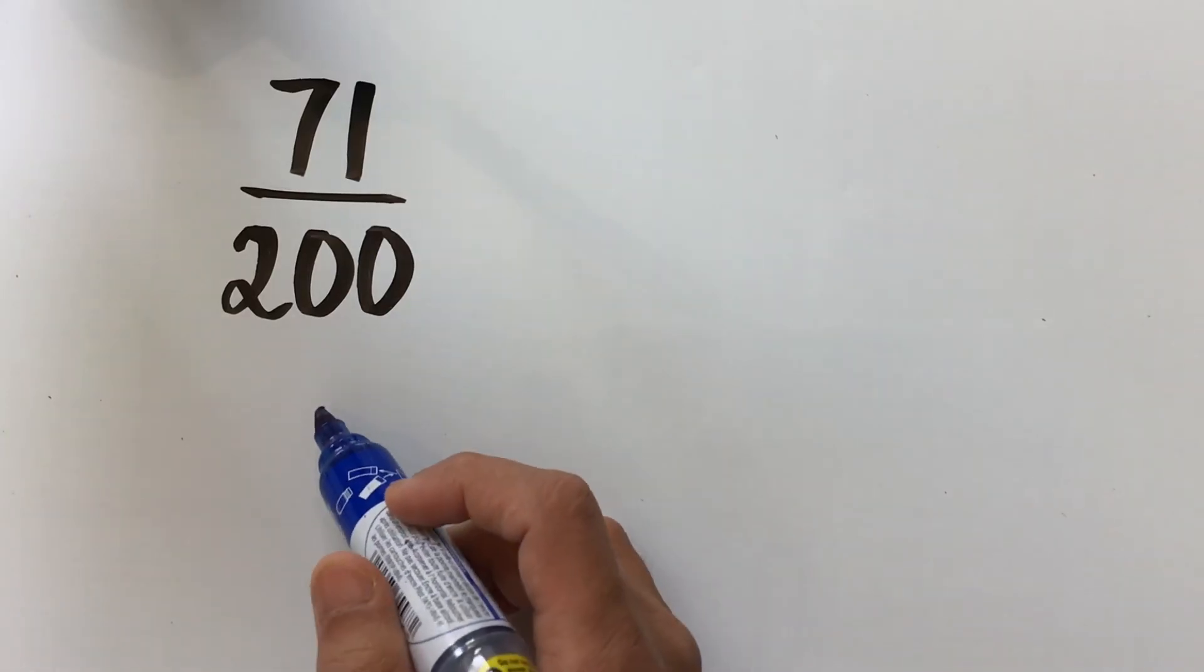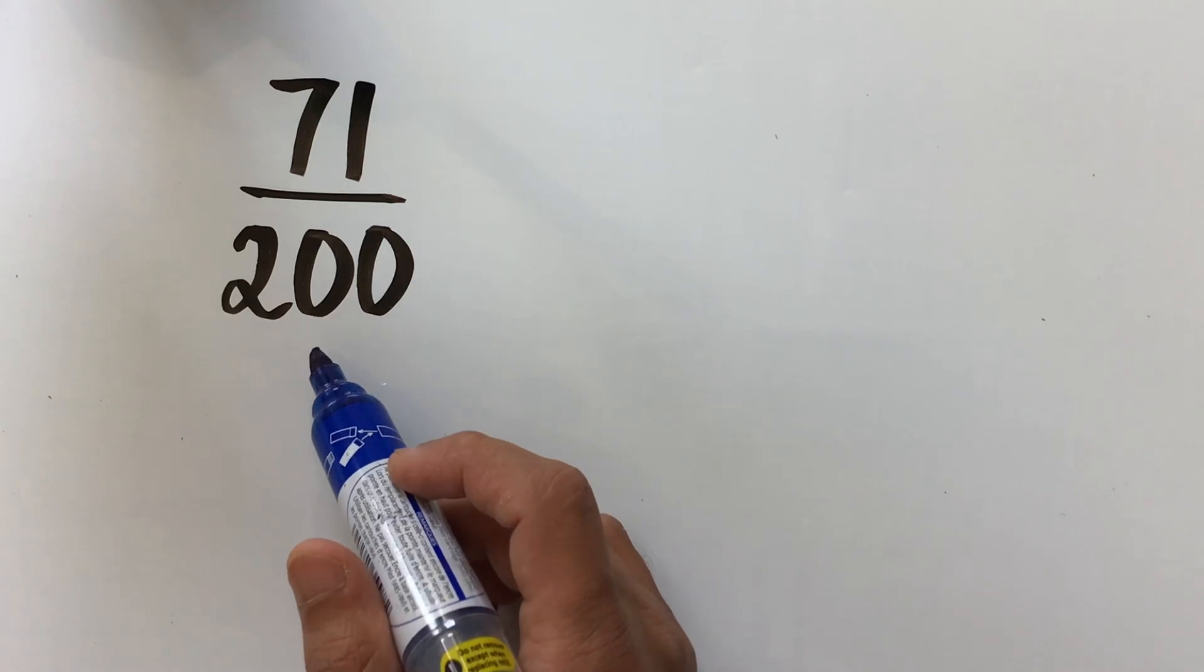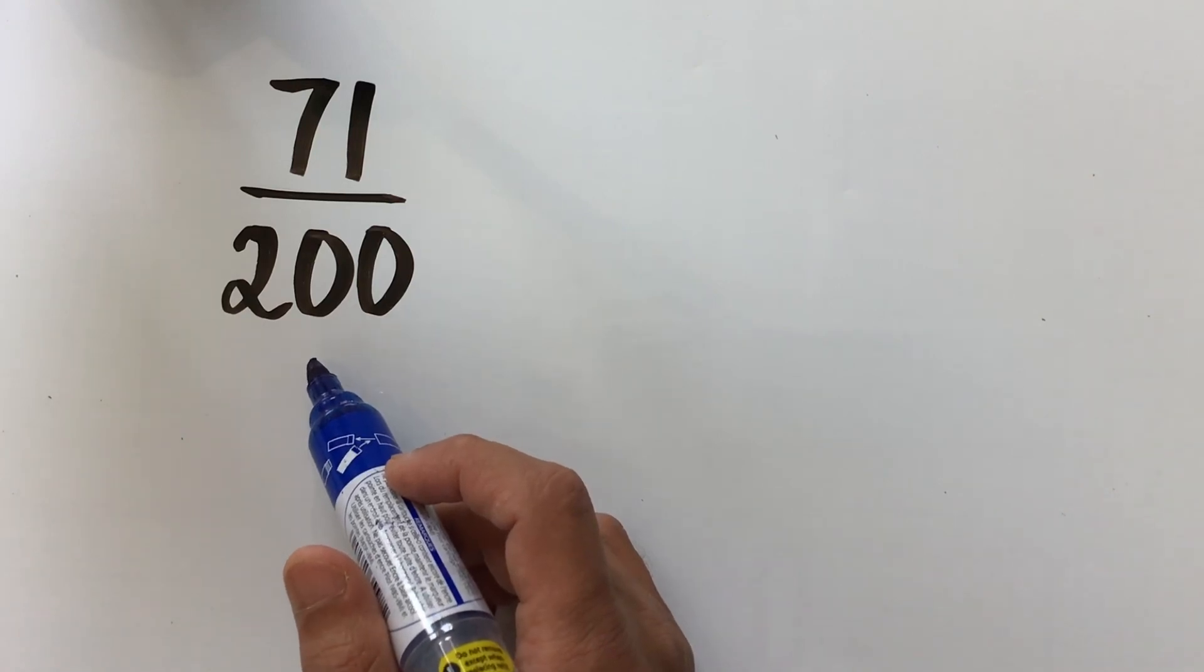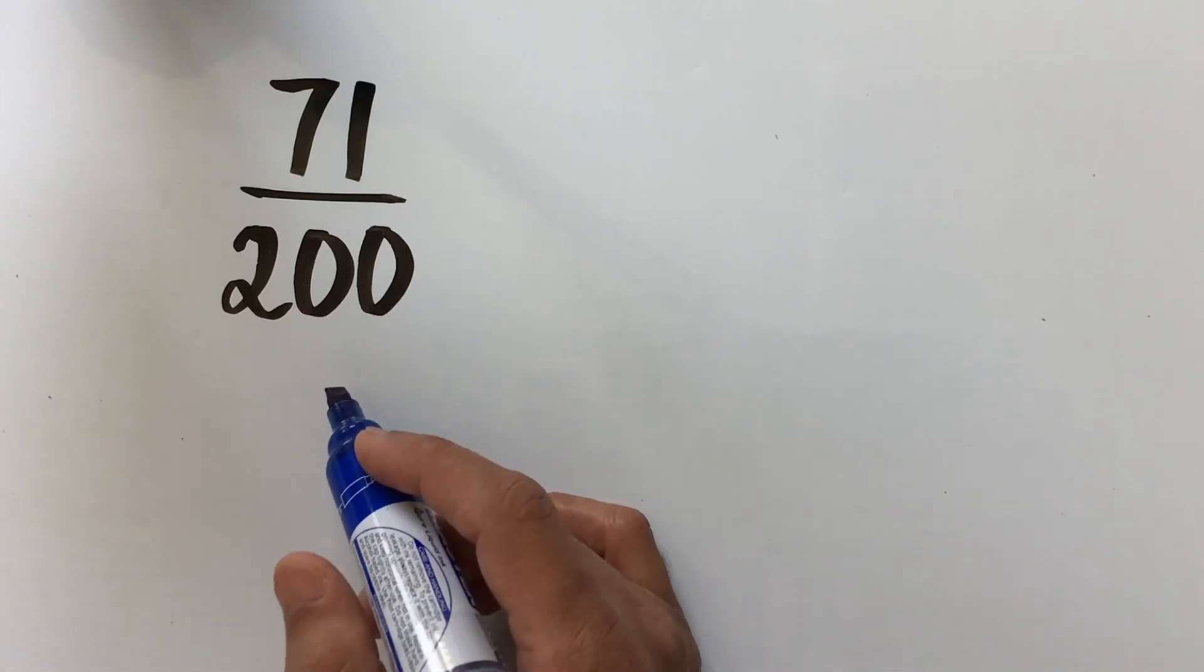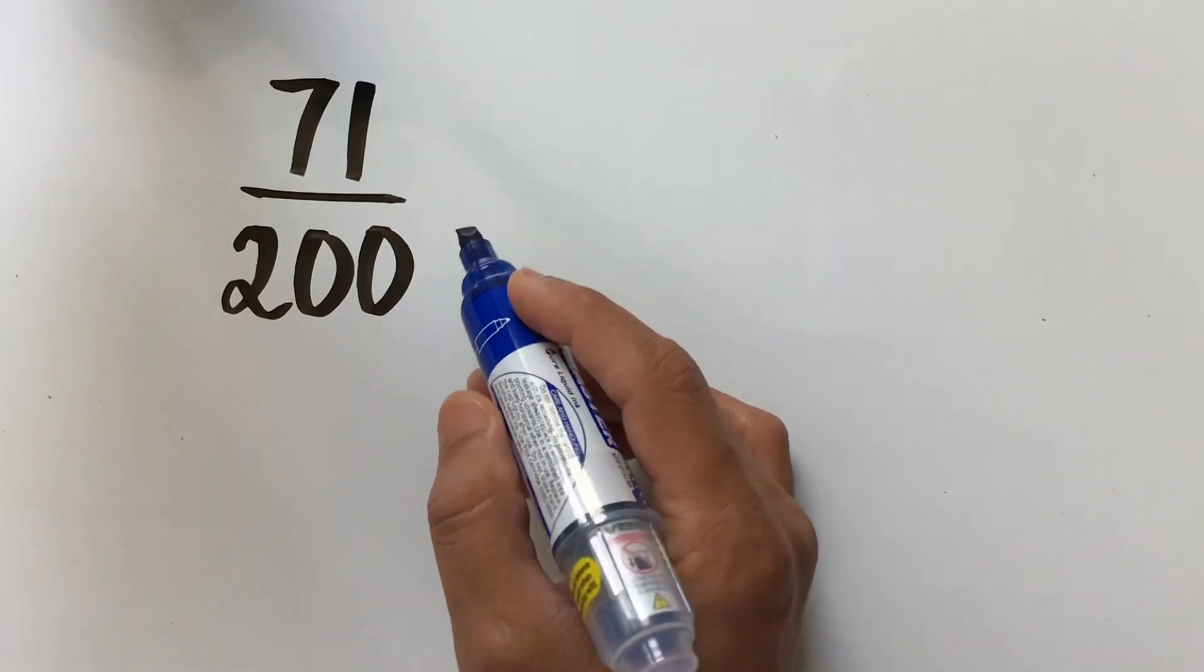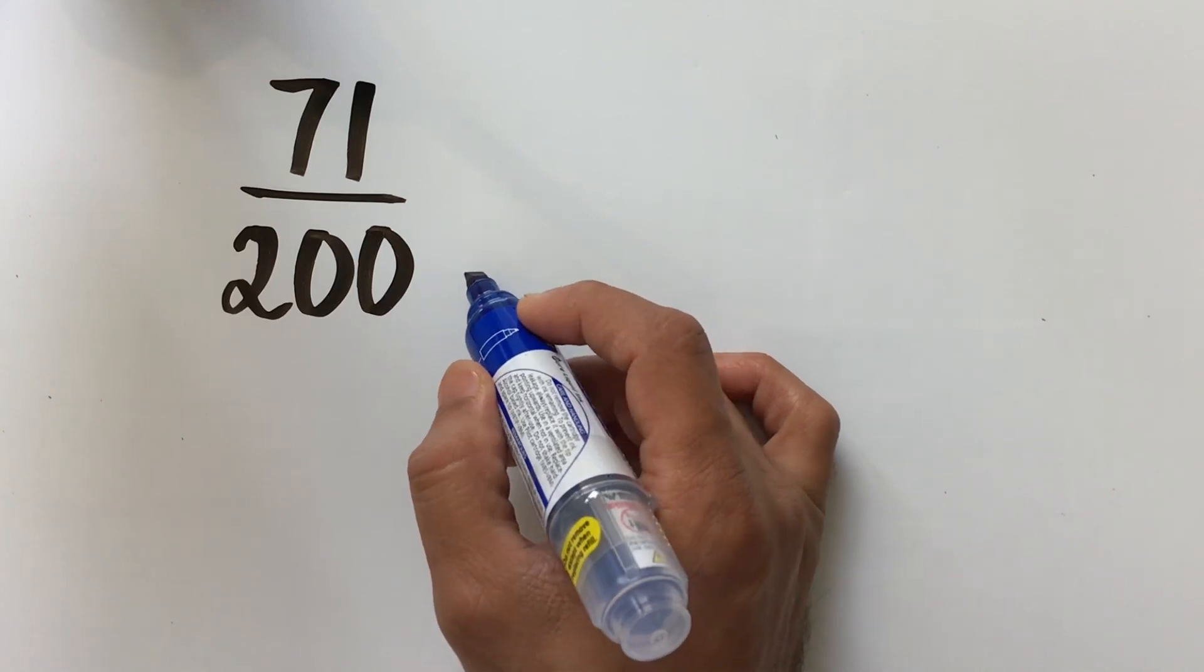In the third example, we have a fraction with the denominator 200. Now, in the first two examples, we multiplied the denominator with a factor to give us 100. In this case, instead of multiplying, we could divide the numerator and denominator by the same factor, which would give us 100 in the denominator.